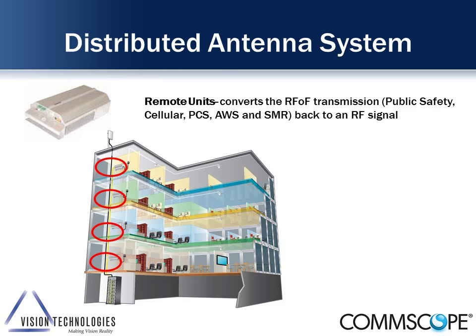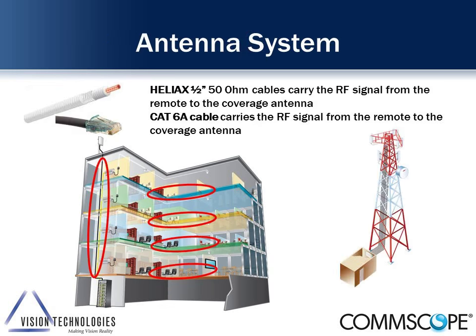The remote units have amplifiers and converters built in for all their respective frequencies. They take the light coming in, convert it back to RF, and then feed the antennas. This can be done with half-inch coax going out to antenna points, or with CAT6A structured cabling — something many people prefer when running out to the antennas.